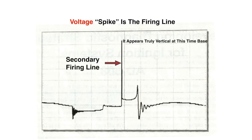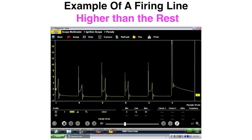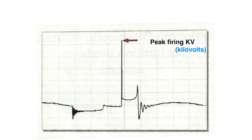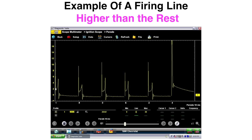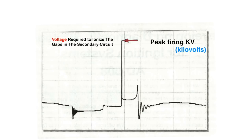It takes a few milliseconds to ionize. This red arrow is your peak firing kV — kilovolts. Here's an example of a firing line that is higher than the rest. From the bottom left to the right, cylinders 1, 5, 3, 6, 2, 4 — number four has a much higher firing line than the rest. Peak firing kV is the voltage required to ionize the gaps in the secondary circuit, which is the spark plug gap. To ionize means to ignite the fuel, both intended and unintended.